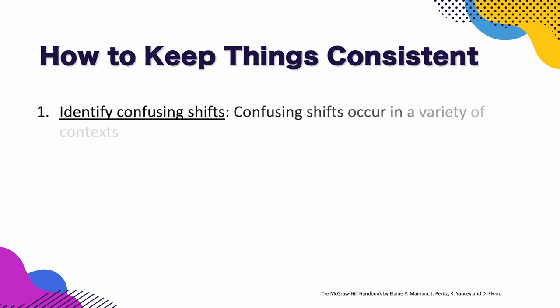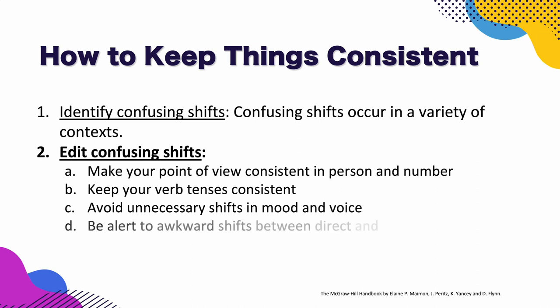How to keep things consistent? First, you need to identify confusing shifts. Confusing shifts occur in a variety of contexts. Then you're going to edit confusing shifts. Make your point of view consistent in person and number. Keep your verb tenses consistent. Avoid unnecessary shifts in mood and voice. And be alert to awkward shifts between direct and indirect quotations and questions.